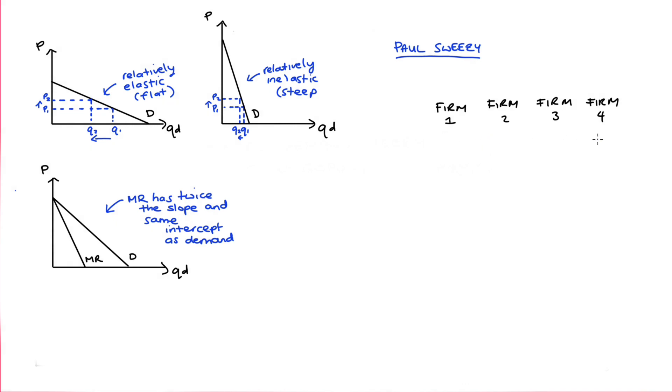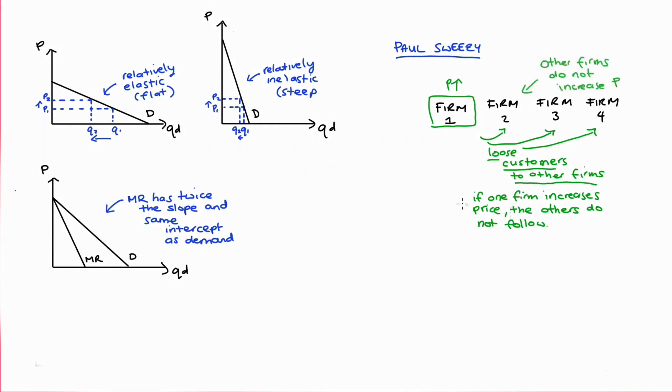Sweezy argued that if one of the competitors increases their price, the other firms are actually not going to follow that price increase. The firms are happy to take all of the demand that that firm loses as a result of increasing their price, and they themselves don't want to lose any customers. So if firm one increased their price, many of firm one's customers would go to the other firms. The other firms are not going to increase their price because they're scared they're going to lose customers as well. If a firm increases its price, it can expect to lose quite a few customers because the other firms will not follow. To say this another way, the firm faces a fairly elastic demand if they increase their price.